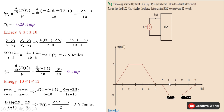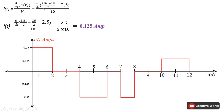Similarly, solving for 8 to 10: we get the energy as a constant value with no variable present, so its derivative is 0, giving 0 ampere from 8 to 10. For 10 to 12: putting the coordinate values gives the energy equation, and taking its derivative gives 0.25 ampere.